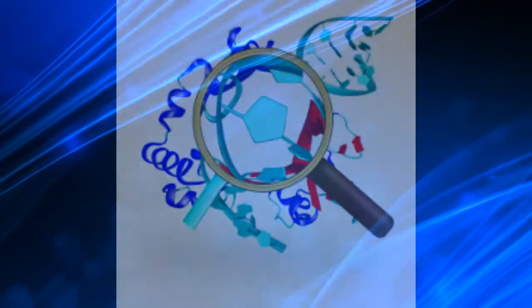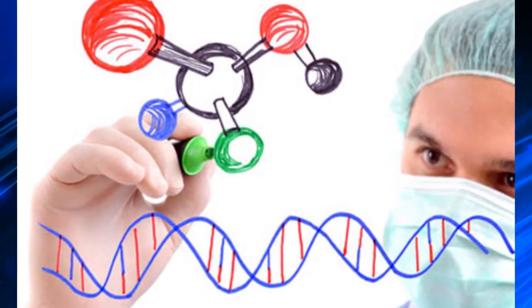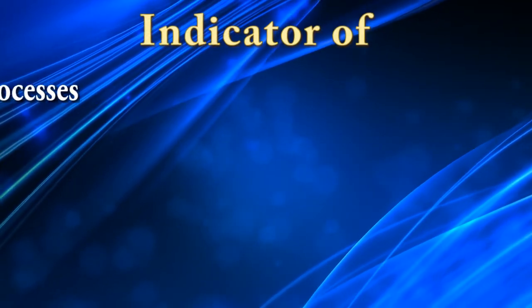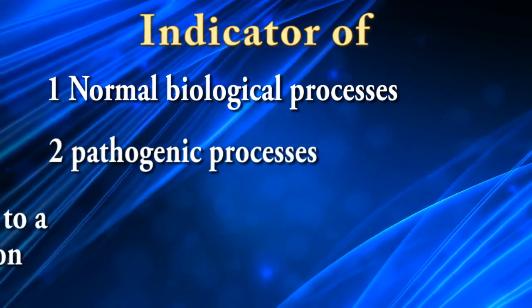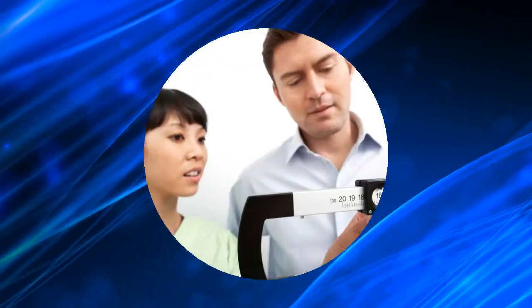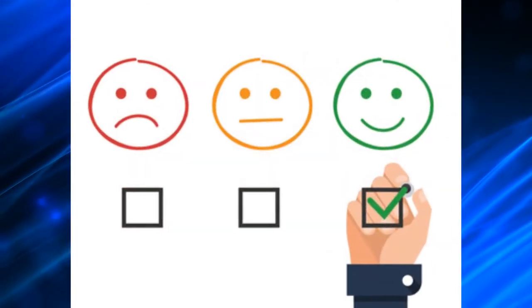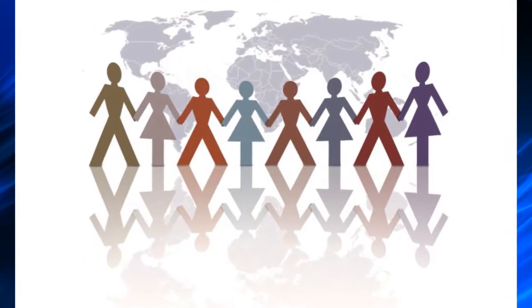A biomarker, or biological marker, is an indicator that is objectively measured and evaluated as an indicator of normal biological processes, pathogenic processes, or pharmacologic responses to a therapeutic intervention. Biomarkers are measures used to perform a clinical assessment, such as blood pressure or cholesterol level, and are used to monitor and predict health states in individuals or across populations.